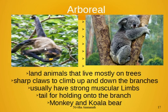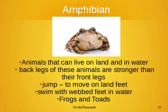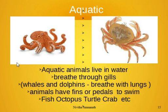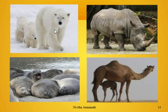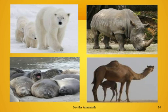To recap: arboreal animals like monkeys and koala bears have strong muscular limbs, a tail for holding branches, and sharp claws. Amphibians like toad and frog live on both land and water, with stronger back legs and webbed feet for swimming. Aquatic animals live in water and breathe through gills — whales and dolphins breathe through lungs. Terrestrial adaptations include fur for polar bears, blubber for seals, thick skin for rhinoceros and elephants, and water storage for camels. We shall see further classification in the next session.